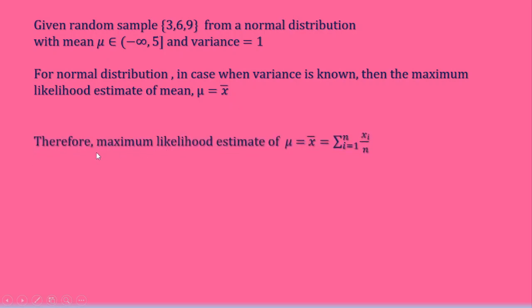So therefore here the maximum likelihood estimate of μ you have to find. So it is μ equals x̄. And here n is 3. x̄ equals summation i equals 1 to n of xi by n, and here n is 3. That is, here the given random sample is of size 3.